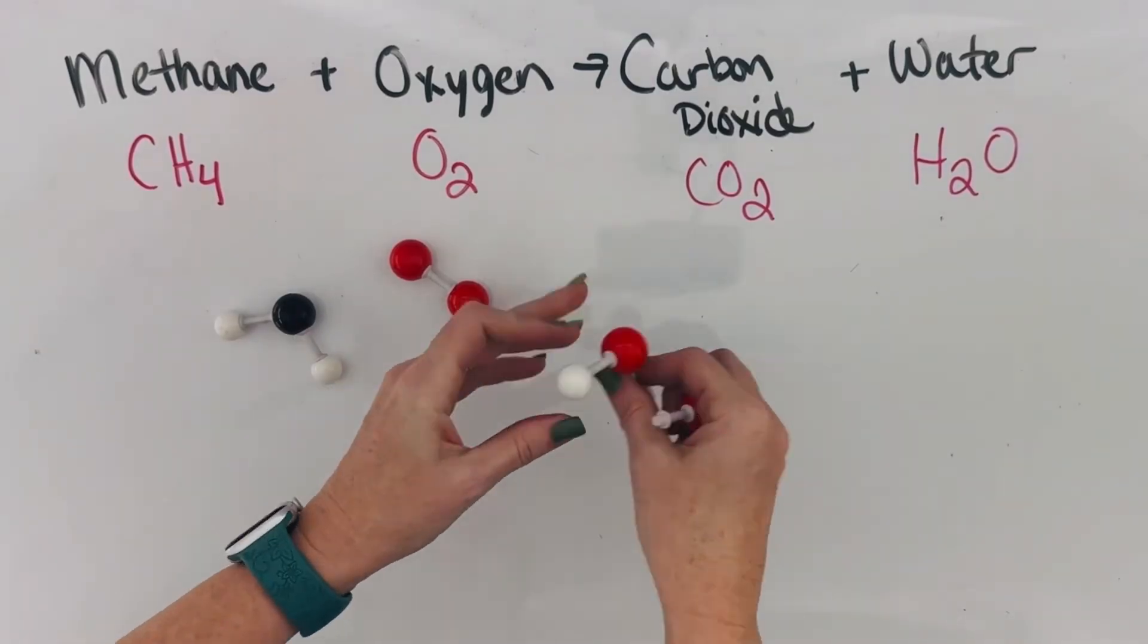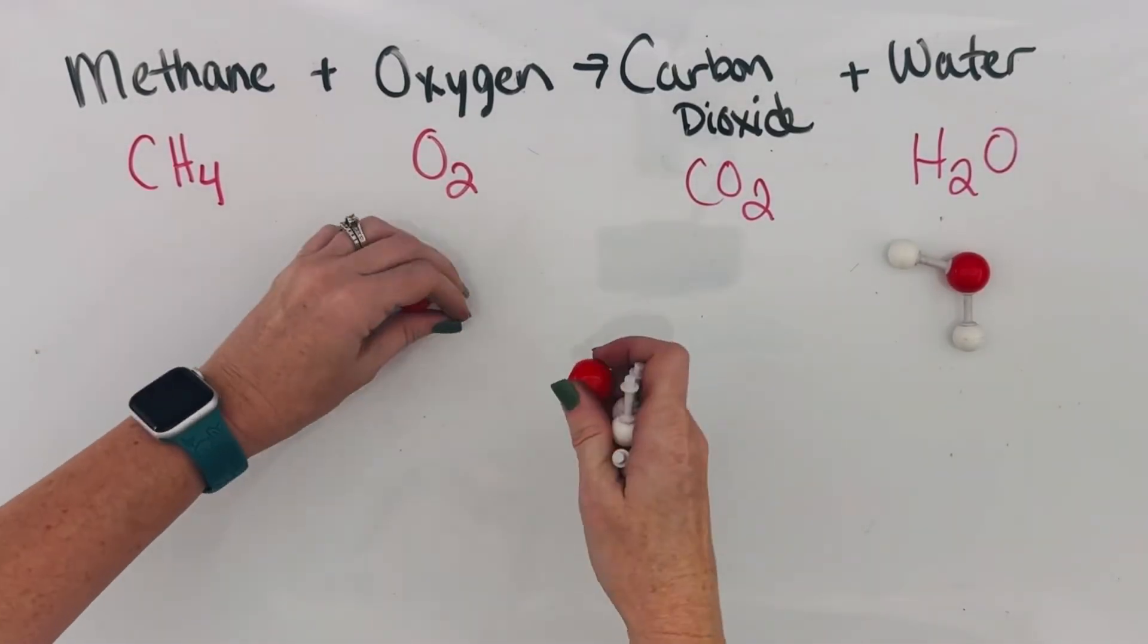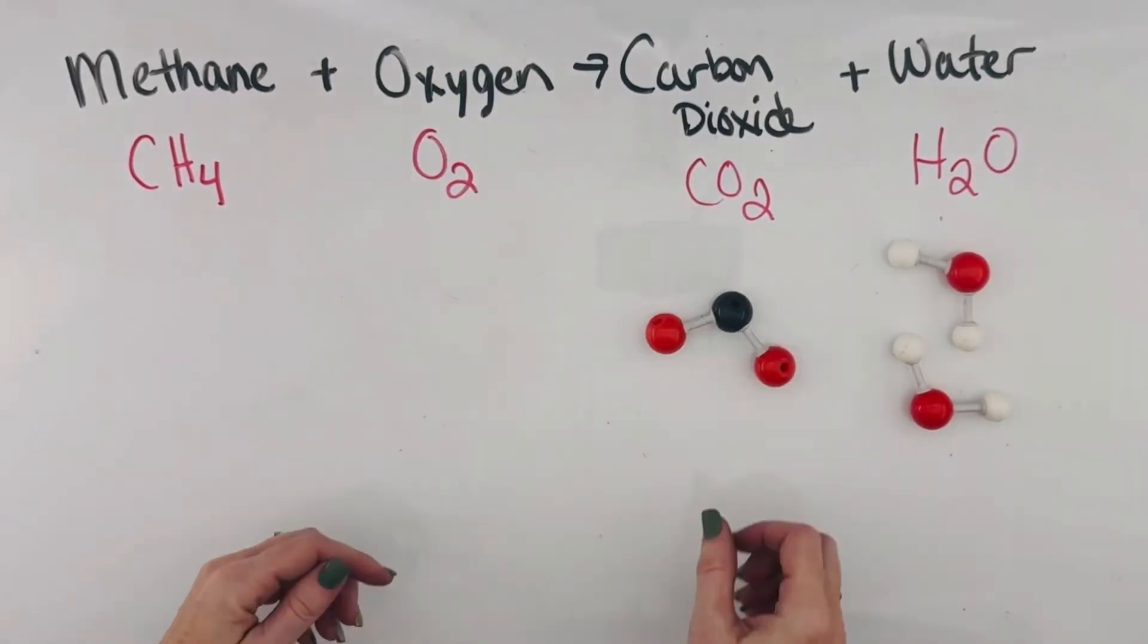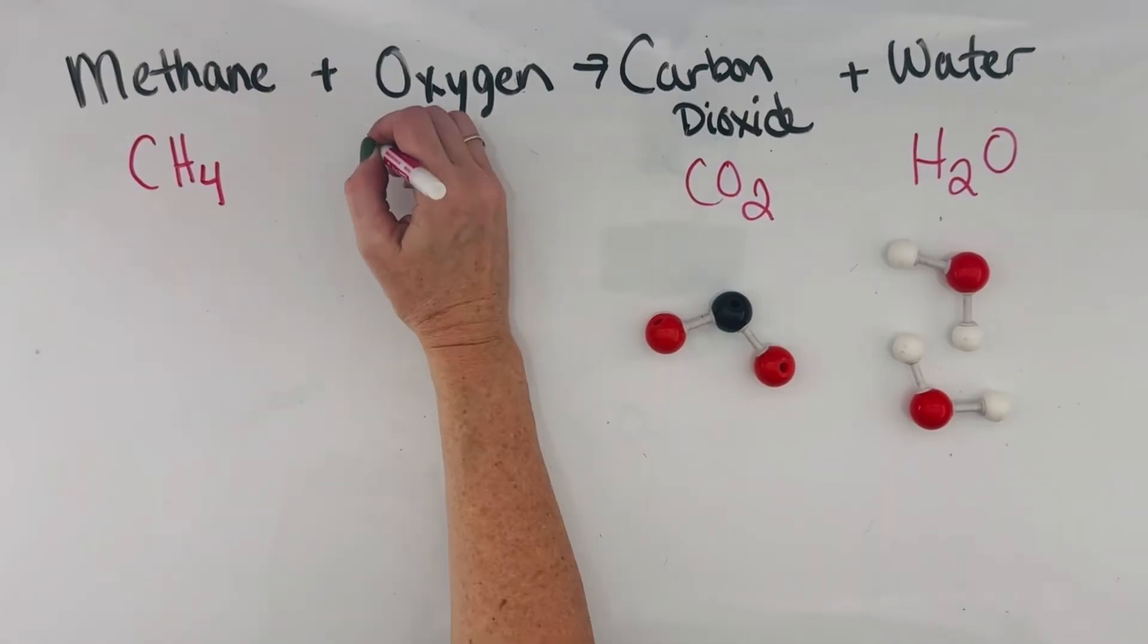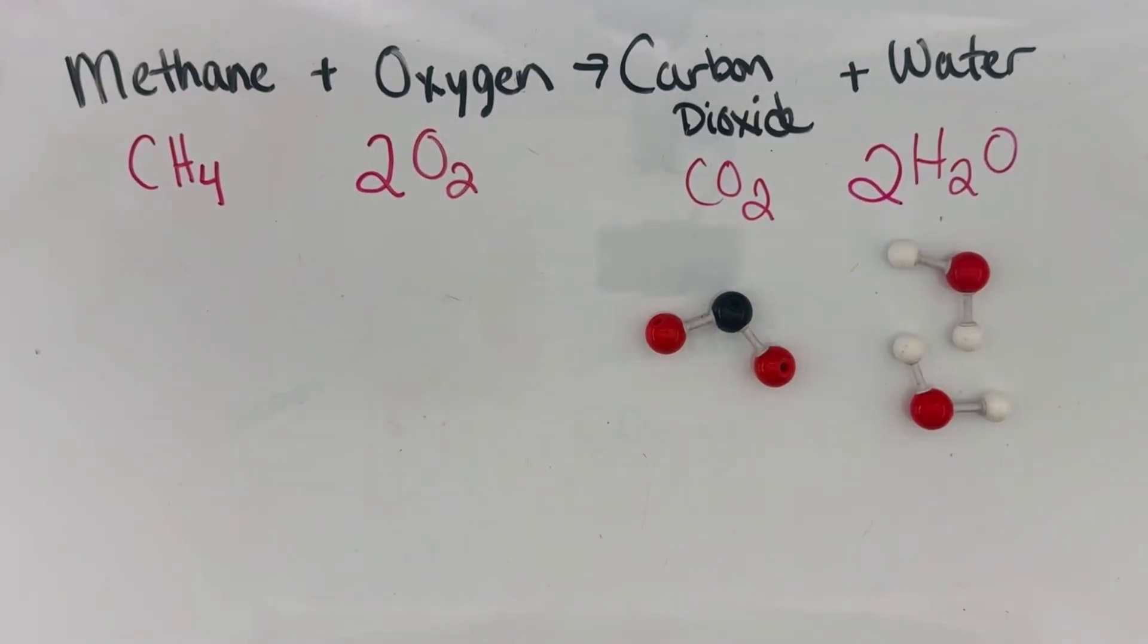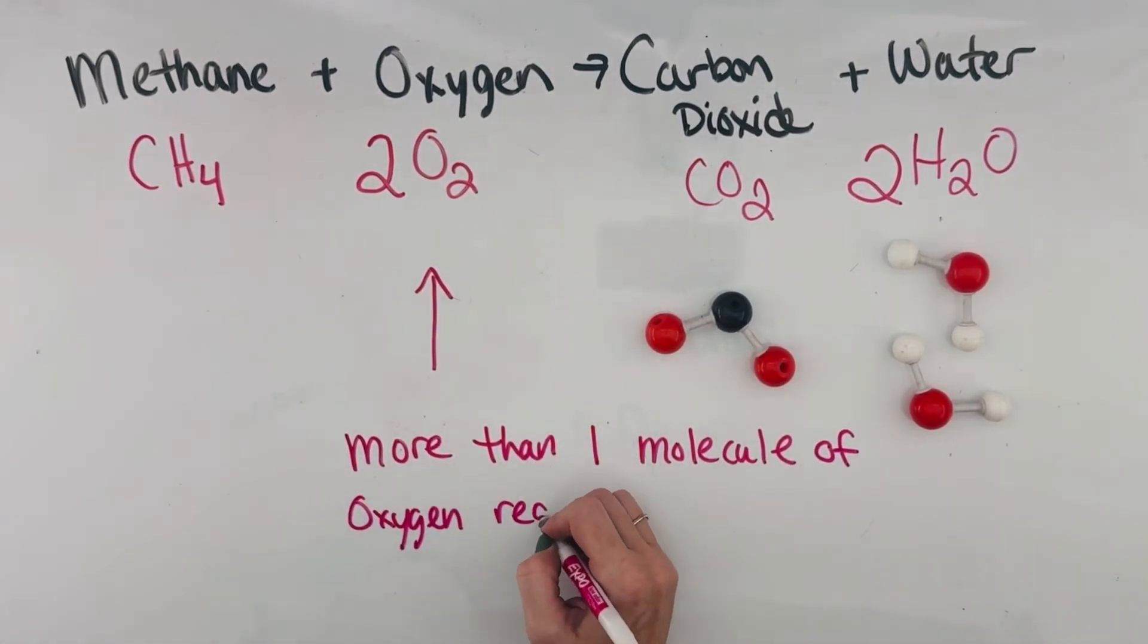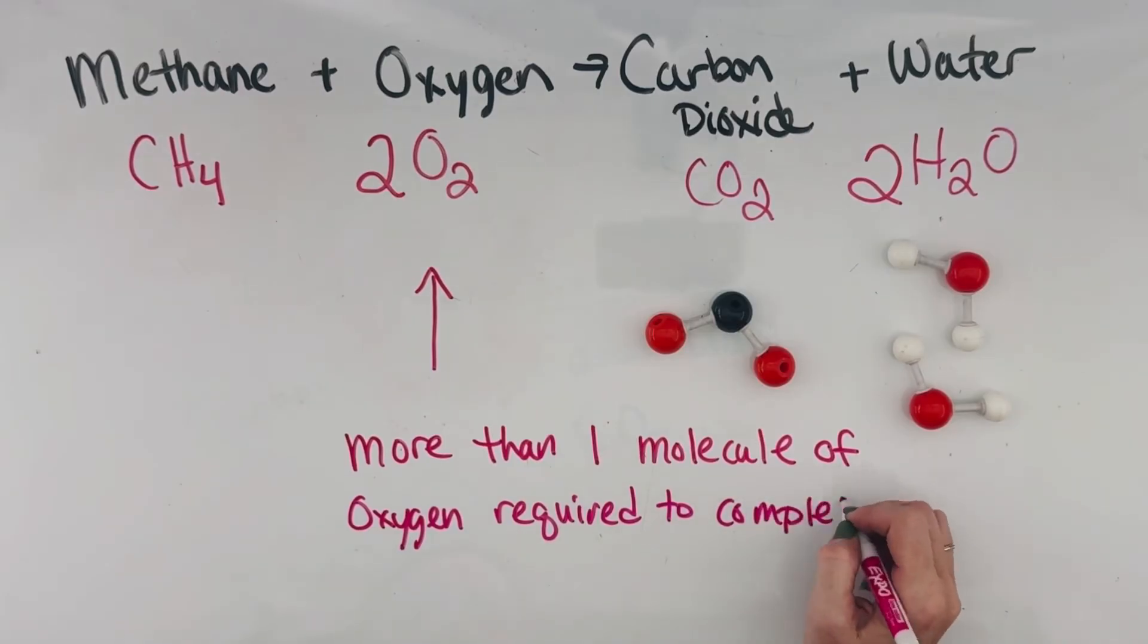And we get then one H2O. We get two H2Os using all those hydrogens and one CO2. So we have to put a coefficient of two in front of the O2 and the H2O because it requires two oxygen molecules to fully react with the methane so that we get carbon dioxide and water molecules at the end.